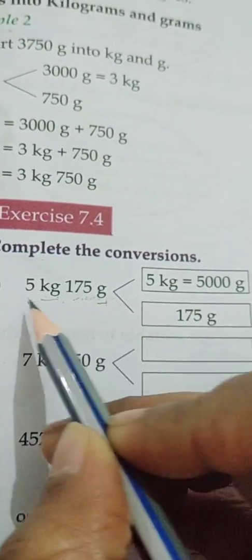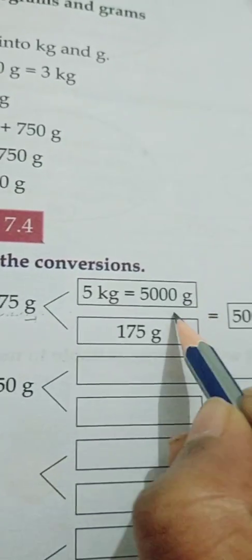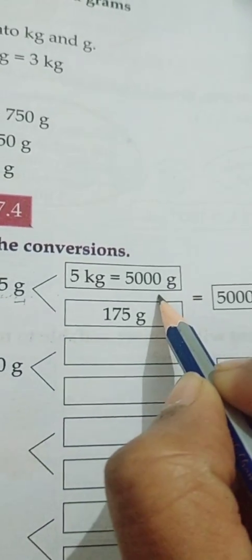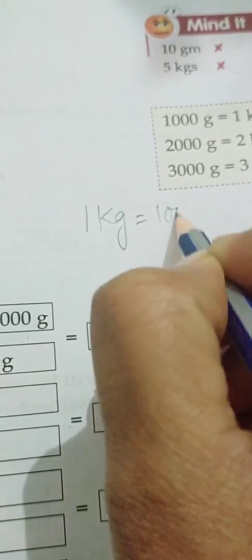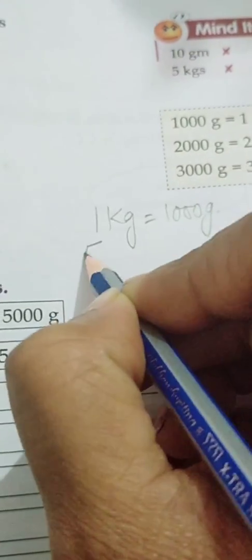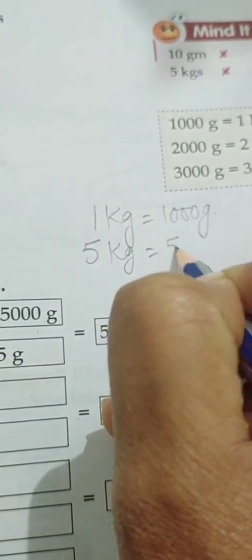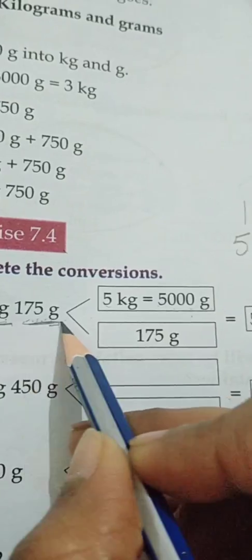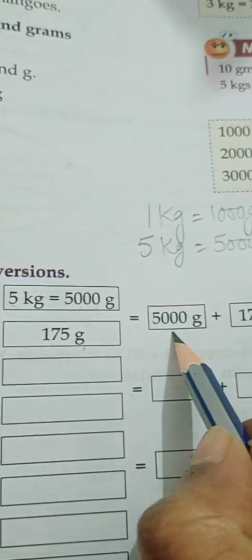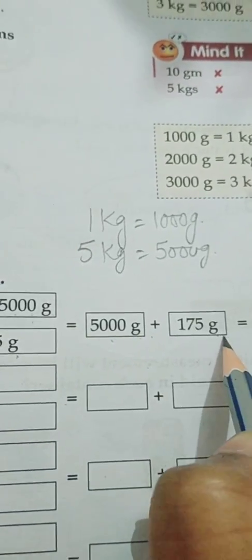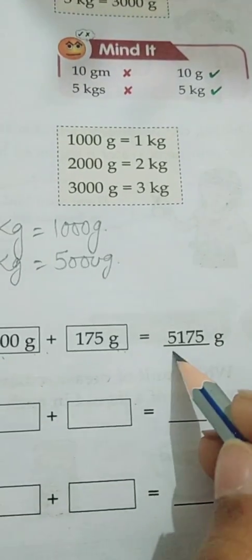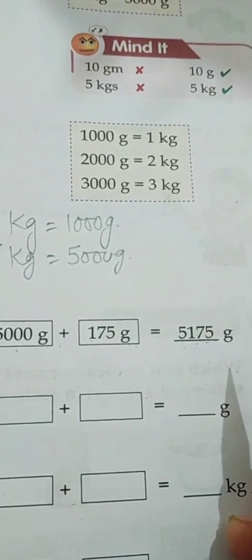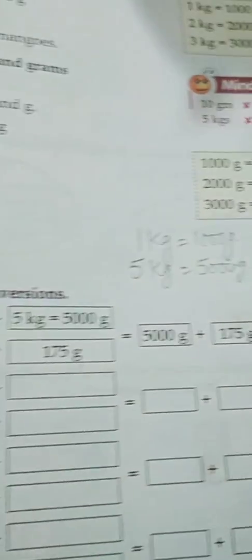The first sum is: complete the conversions — 5 kilogram 175 grams. Five kilograms means five thousand grams, because one kilogram equals one thousand grams, so five kilograms equals five thousand grams. Five thousand grams plus 175 grams gives a total of five thousand one hundred seventy-five grams.